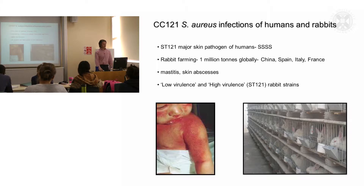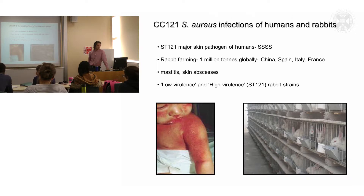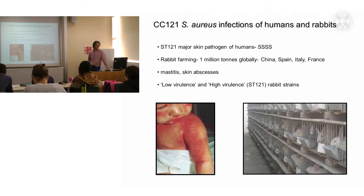Of interest is the fact that in the rabbit farming industry we also see CC121 strains. So we've got another example here of a multi-host association for a clonal complex of Staph aureus, and there seems to be one particular strain which is responsible for a lot of the epidemics we see in rabbit farms.